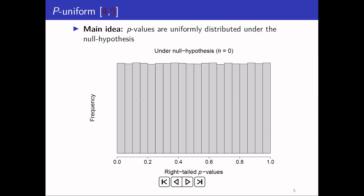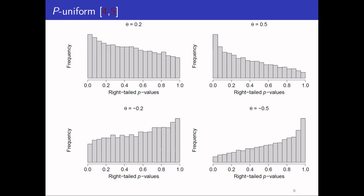The p-uniform method makes use of the property that p-values are uniformly distributed under the null hypothesis. We also know the p-value distribution for other effect sizes: if the effect size is 0.2, we get a right-skewed distribution; if it's 0.5, the distribution is even more right-skewed. For negative effect sizes, the opposite is true — a left-skewed distribution for −0.2, becoming more left-skewed for −0.5. The p-uniform method uses this property to estimate the effect size. More technical details are in these two papers.